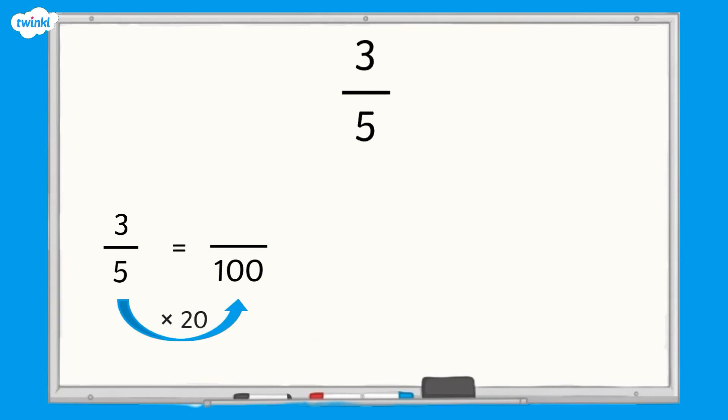We can multiply five by twenty to give us a denominator of one hundred. We must apply the same rule to the numerator. Three multiplied by twenty equals sixty. We can say that three-fifths is equivalent to sixty-hundredths.